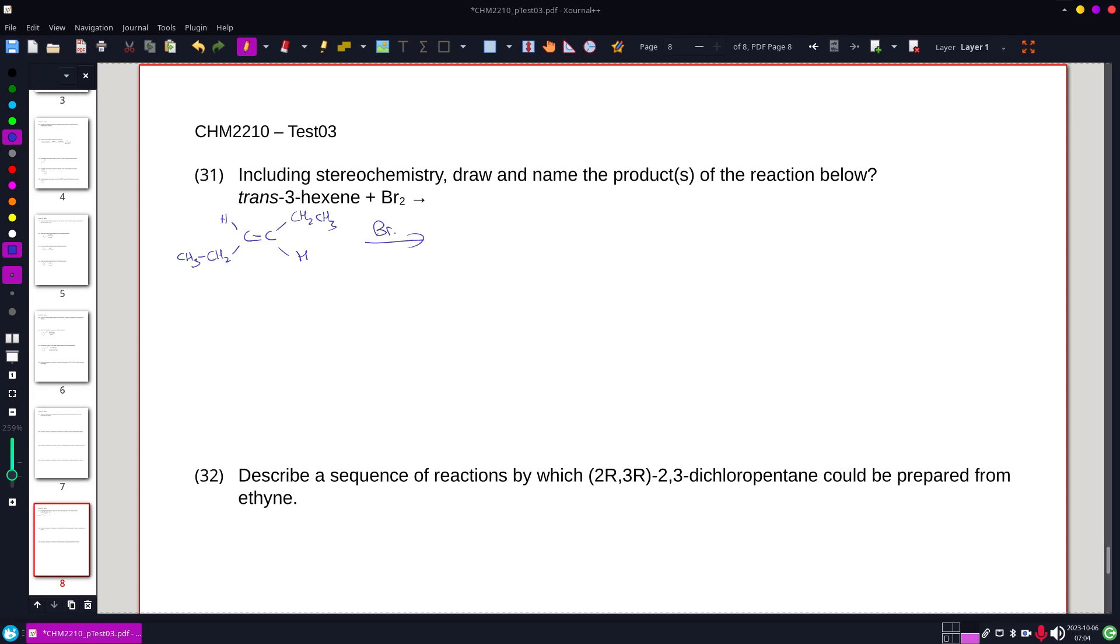But what we're going to do is realize that those two locations, one's gonna get a bromine on one side, and because it's anti, we're expecting the bromine to be on the other.